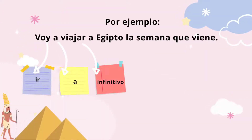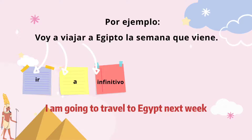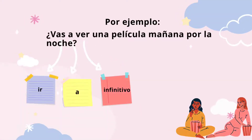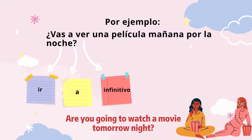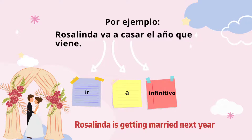Here are some examples to clearly see how to apply the structure ir + a + infinitivo in a sentence. For example: 'Voy a viajar a Egipto la semana que viene' — I am going to travel to Egypt next week. 'Vas a ver una película mañana por la noche?' — Are you going to watch a movie tomorrow night? 'Rosalinda va a casarse el año que viene' — Rosalinda is getting married next year.